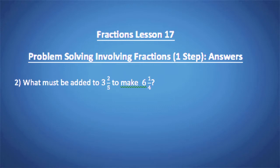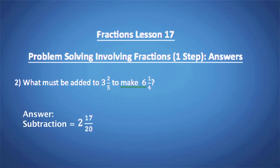Question 2. What must be added to 3¼ to make 6¼? The operation is subtraction — you take away 3¼ from 6¼ — and the answer is 2 and 17 over 20.